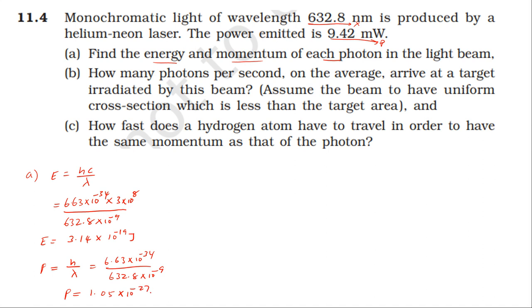Momentum is 1.05 times 10 power minus 27 kilogram meter per second. Second part: how many photons per second on average are irradiated? Power is equal to energy by time. Number of photons emitted per second is equal to power times lambda by hc.